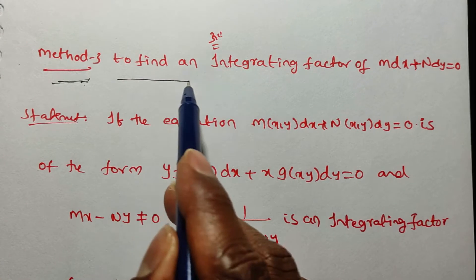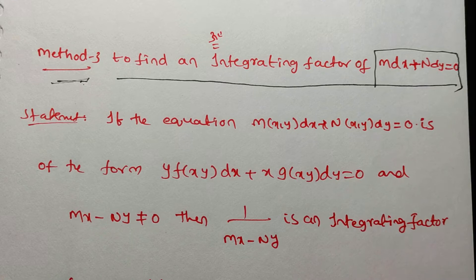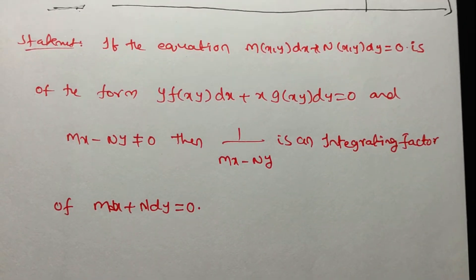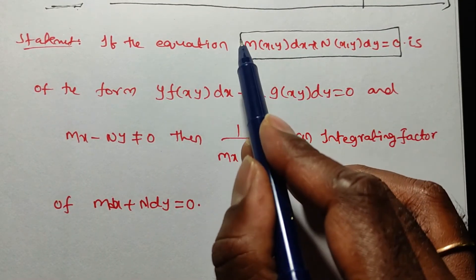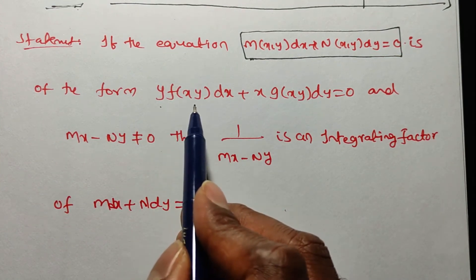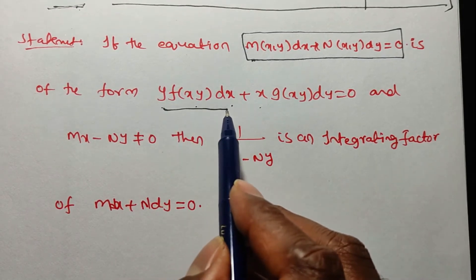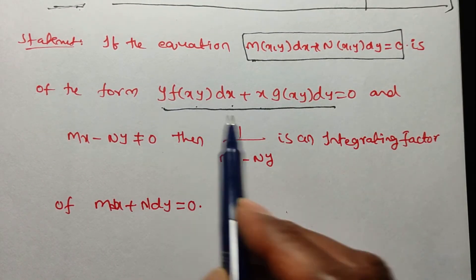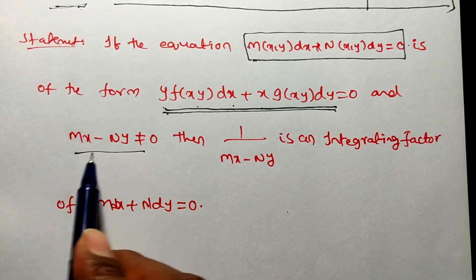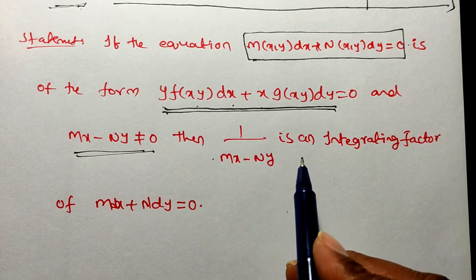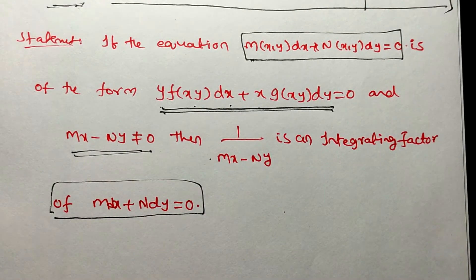Method 3: to find an integrating factor for the given differential equation M dx + N dy = 0. The statement is: if the given differential equation M dx + N dy = 0 is in the form y·f(xy) dx + x·g(xy) dy = 0, and Mx - Ny ≠ 0, then 1/(Mx - Ny) is an integrating factor of the given differential equation.